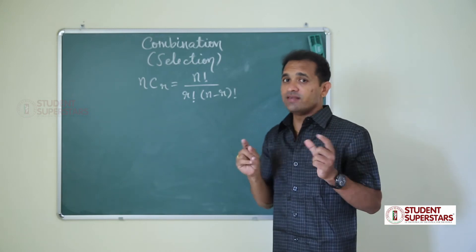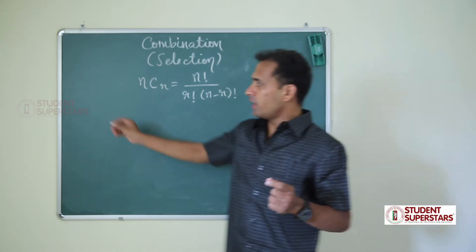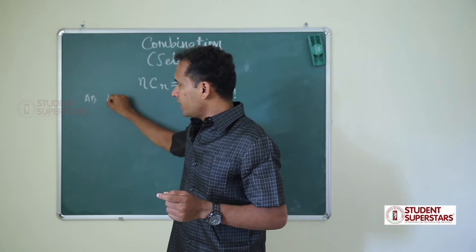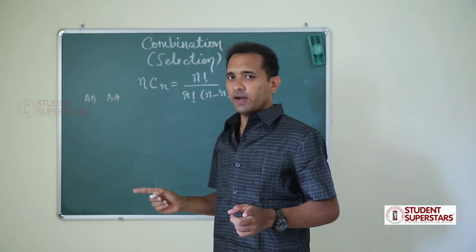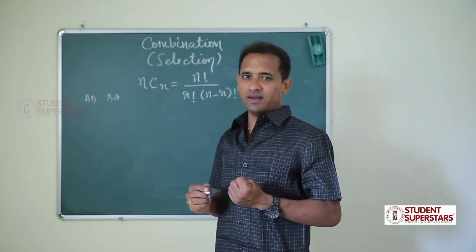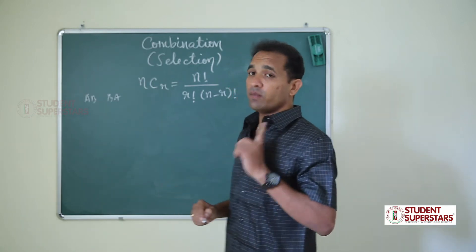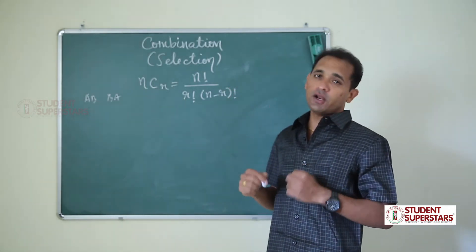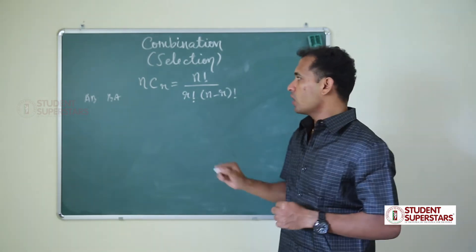In permutation, the order is important. In permutation, A,B and B,A are different. But in combination, A,B and B,A are the same because we are selecting. So in permutation, order is important, but in combination, order is not important.